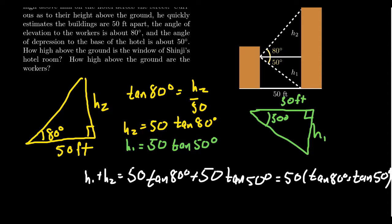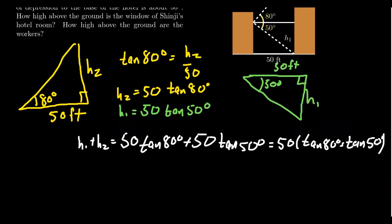Now it might be very tempting here to try to add together the angles, like just take the tangent of 130 degrees. But tangent doesn't work that way. We can't add the angles together. We actually have to compute tangent of 80 plus tangent of 50.